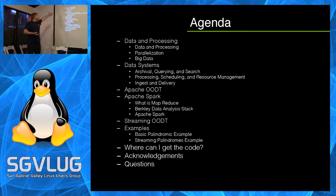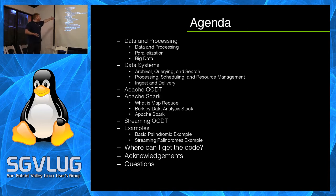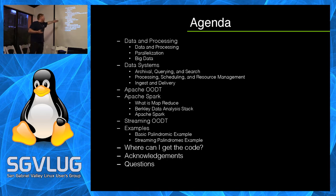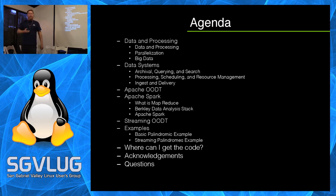Our basic agenda is we're going to talk about data processing, then jump into what data systems are, why they're used, and what they do. Then we'll go through the original data system we developed at JPL called Apache OODT, then talk about Apache Spark, the new revolutionary technology in the Big Data world. We'll talk about the combination of those two Apache technologies, run through an example, and then I will convince you to join our open source project.